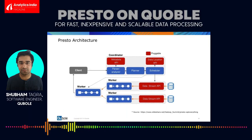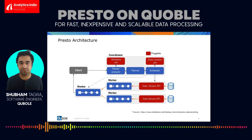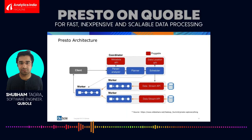To do this work, the coordinator talks to the data source the query is using. For example, if you're using Presto to access Hive, the coordinator uses Hive APIs to fetch information about the Hive tables — their schema, columns, etc. At the scheduling phase, it fetches information about splits: what files are part of the table, and depending on which worker can access which files, it schedules those files as splits on the tasks submitted to workers.